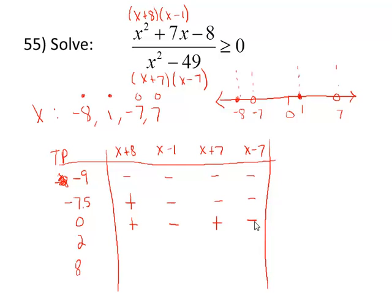When I plug in 2: 2 + 8, 2 - 1, and 2 + 7 are all positive. But 2 - 7 is negative. And finally, if you substitute in 8, all four of these factors are positive.